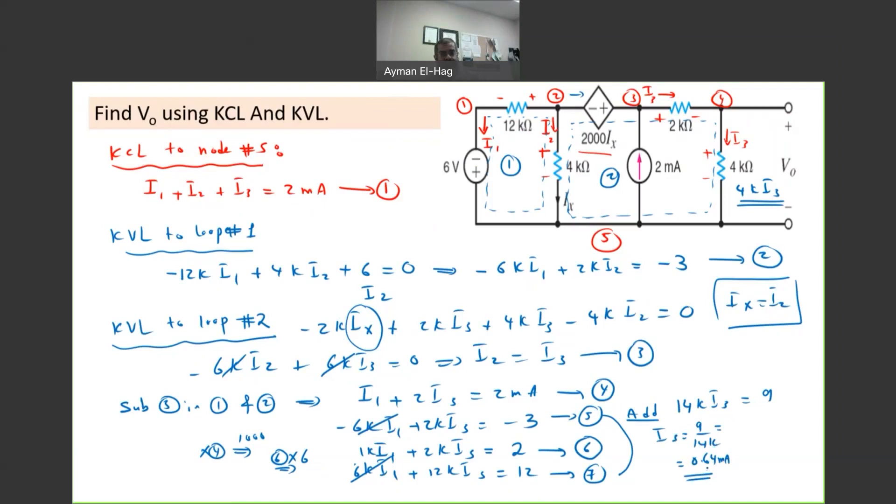If this is my I3, I can find my Vout. What is my Vout? It is 4K times I3. So 4,000 times 0.64 milliamp, and this will give me Vout equal to 2.56 volt. This is my volt that I'm looking for.